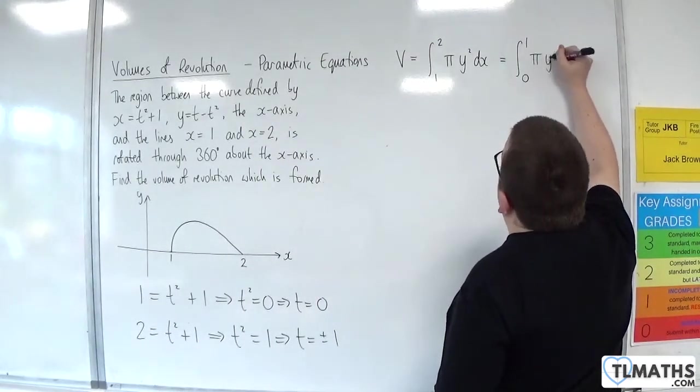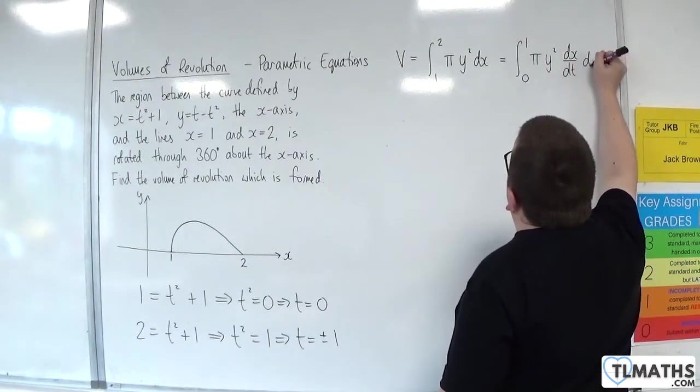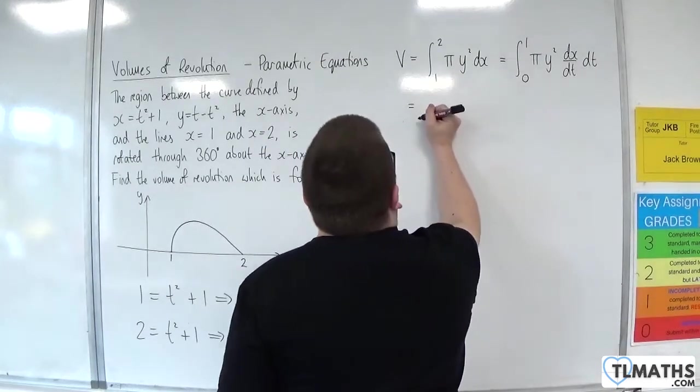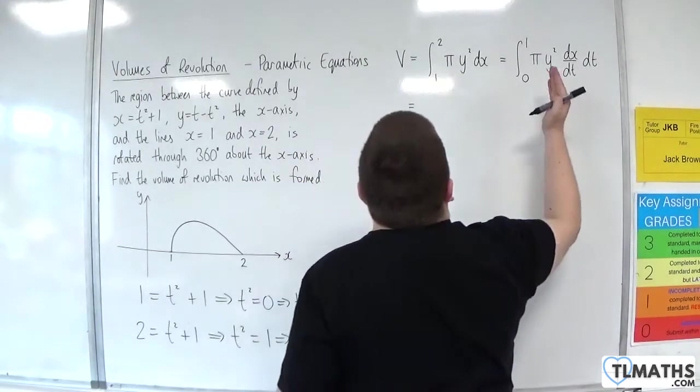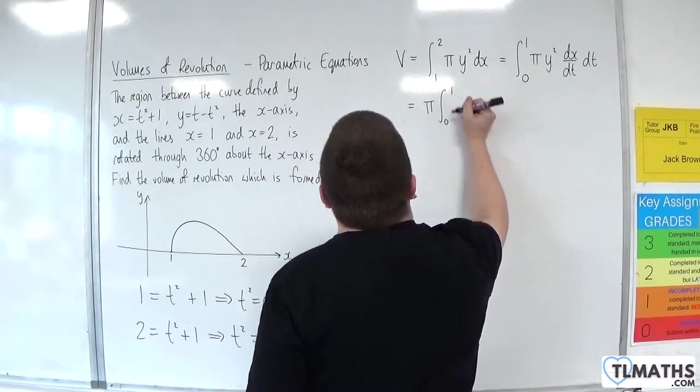So pi, y squared, then dx by dt, dt. I'm going to bring the pi out to the front.